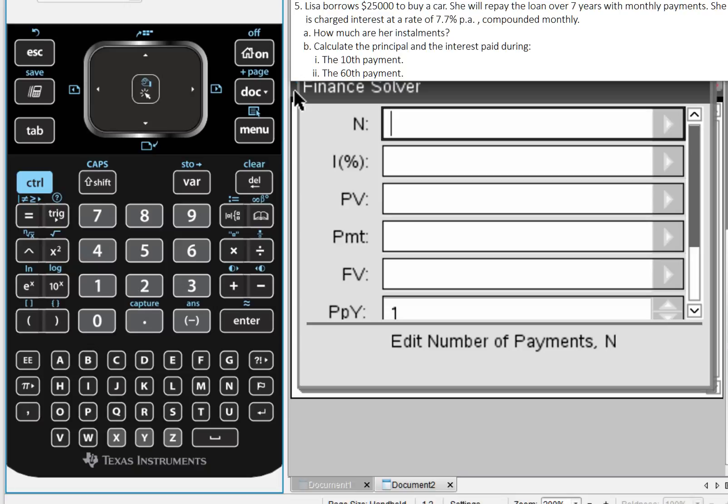Lisa borrows $25,000 to buy a car. She will repay the loan over 7 years with monthly payments. She is charged an interest rate of 7.7% per annum compounded monthly.